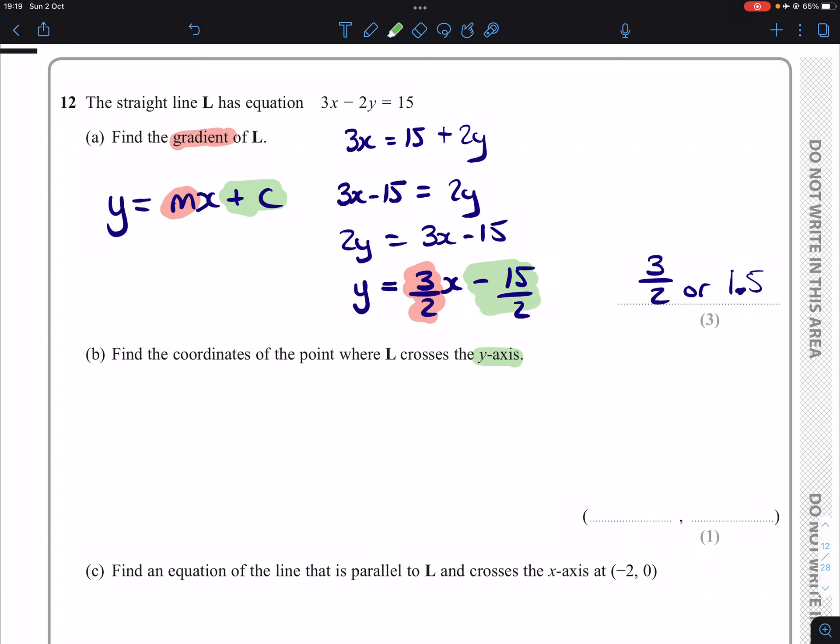Which means that this number here will tell us where on the y-axis, or how high on the y-axis, our line intersects with it. Therefore, our y-coordinate is -15/2. Our x-coordinate, because of the fact that we are on the y-axis, our x-value will be 0.